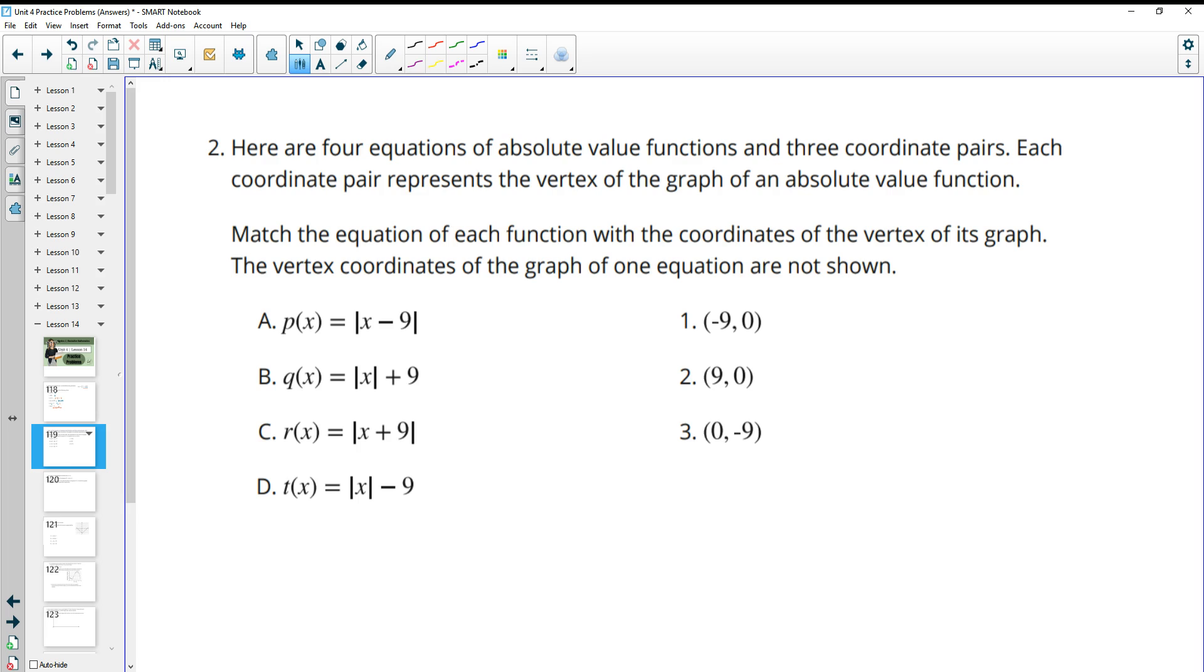Number two, here are four equations of absolute value functions and three coordinate pairs. Each coordinate pair represents the vertex of a graph of an absolute value function. Match each equation of each function with the coordinates of the vertex of its graph. The vertex coordinates of the graph for one equation are not shown.